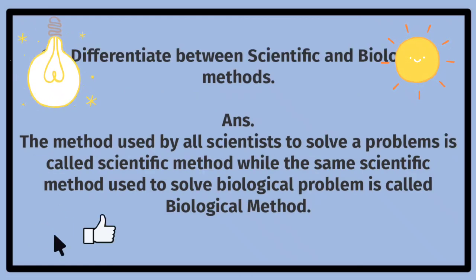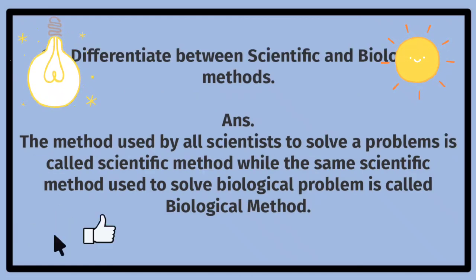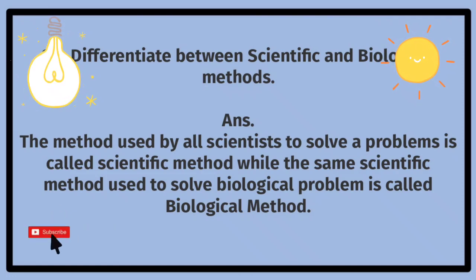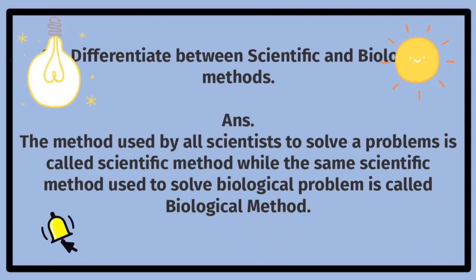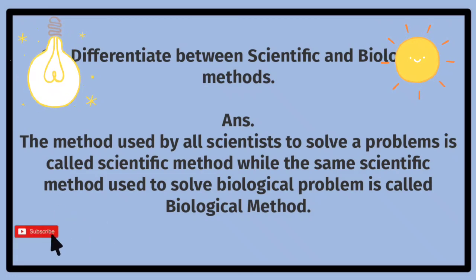Differentiate between scientific and biological methods. The method used by all scientists to solve a problem is called scientific method, while the same scientific method used to solve a biological problem is called biological method. Sainci aur hayatiyati tariqon mein farq karein.